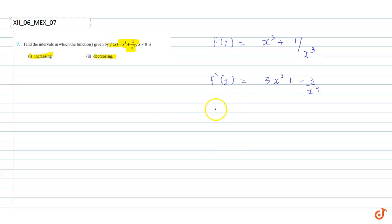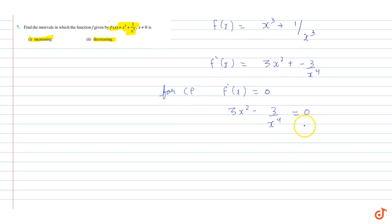Now, critical point is when f'(x) is equal to 0. So, indirectly, 3x square minus 3 upon x raised to power 4 is equal to 0. So, what happens here?